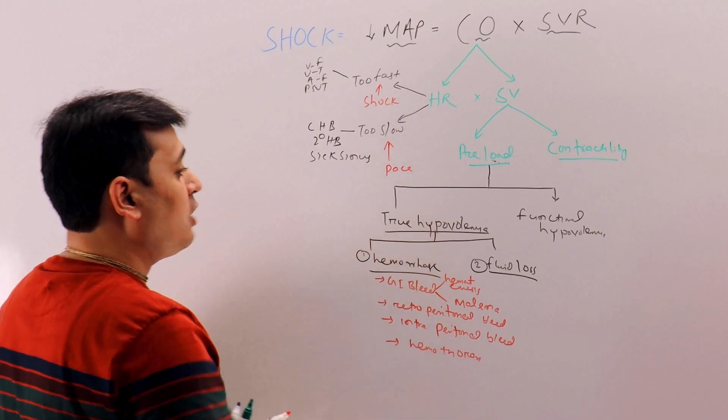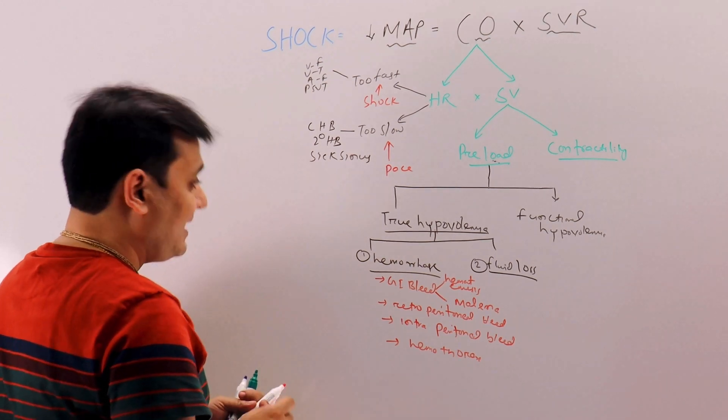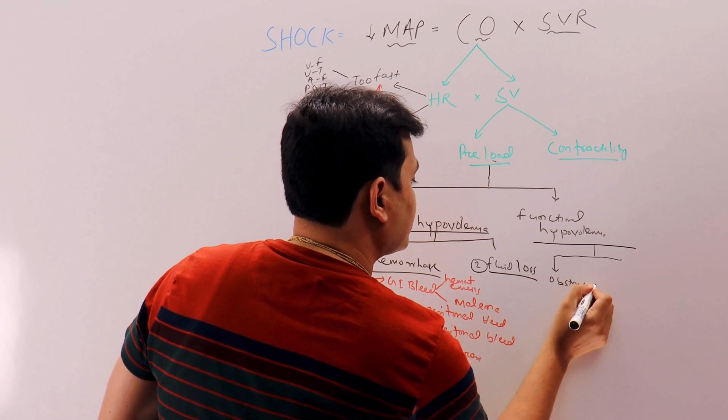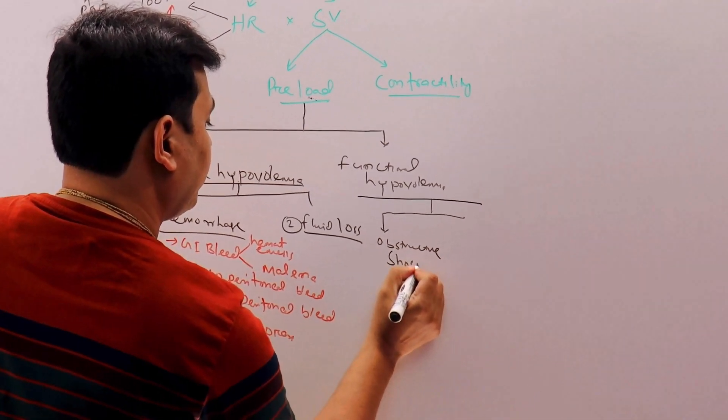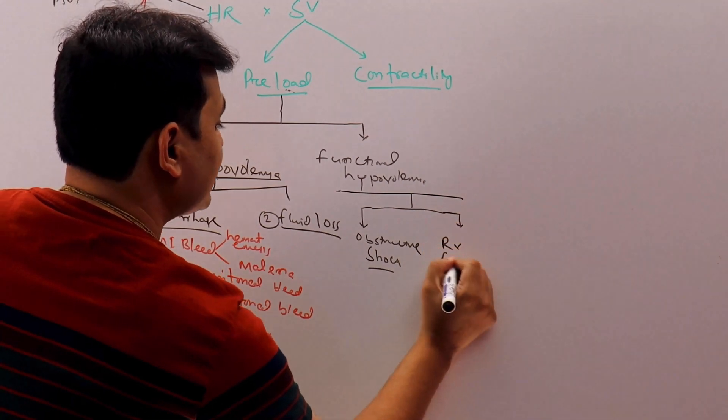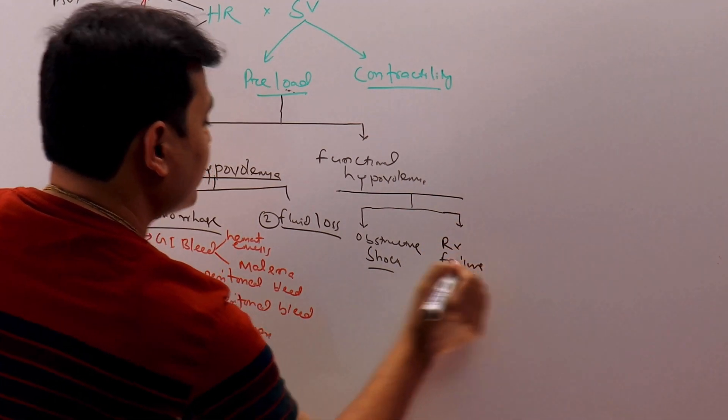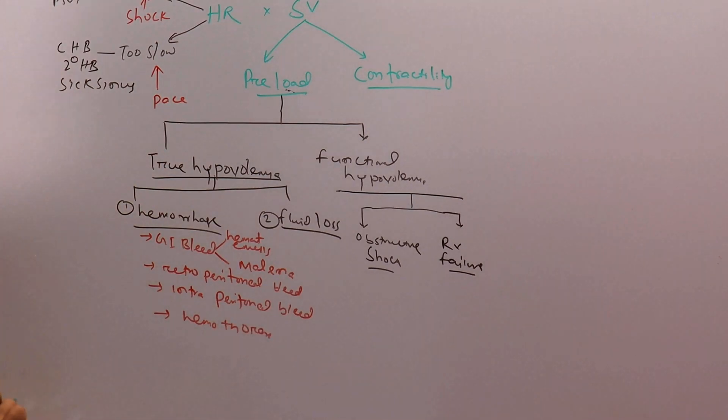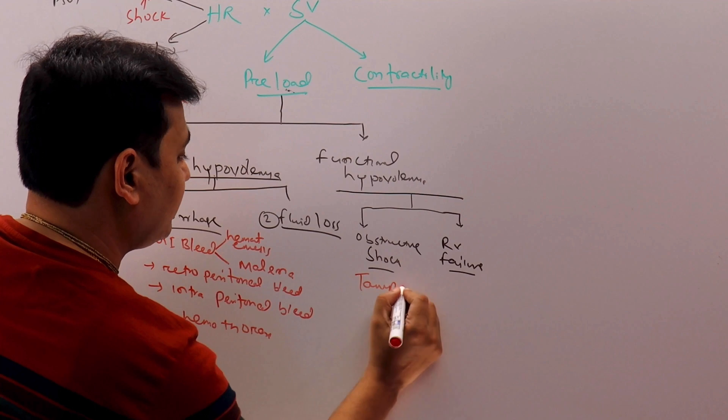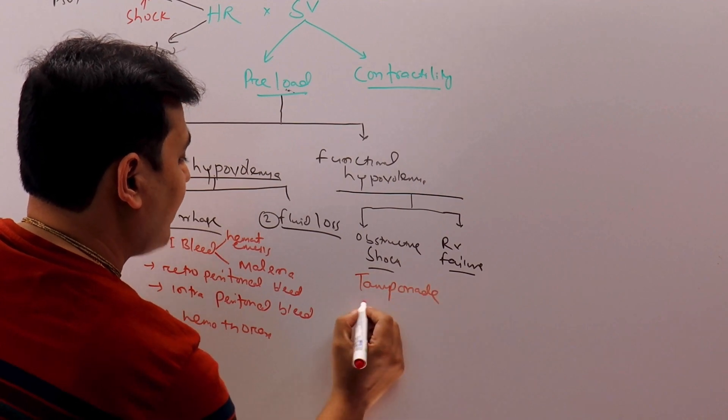So what is functional hypovolemia? It can again be divided into two types. One is obstructive shock and another is RV failure. This is direct RV failure and this is indirect RV failure. So now in obstructive shock we have tamponade, we have tension pneumothorax.